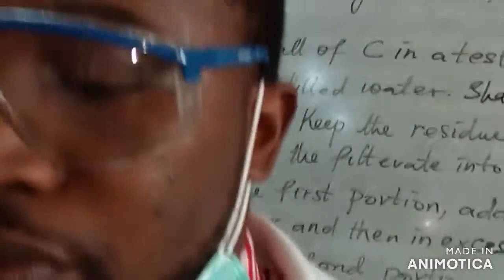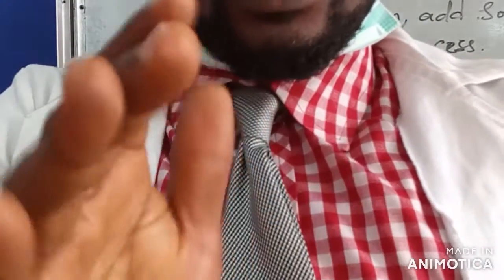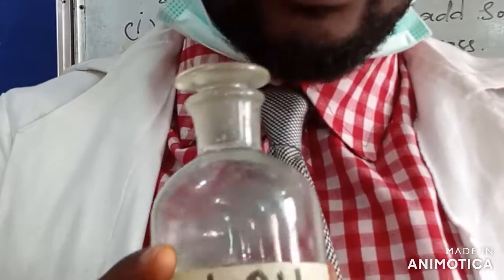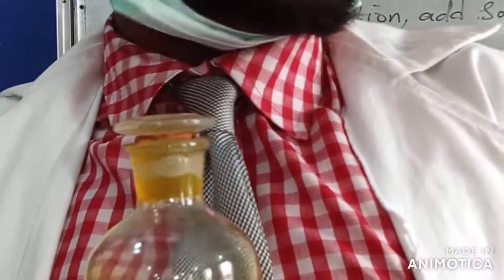Before I start, I would like to show us the reagents for today's salt test. The first one is our sodium hydroxide solution, which is very necessary for tests of cations. We also have our aqueous ammonia, which is our ammonium hydroxide. We have the barium chloride solution, and we also have our hydrochloric acid and potassium dichromate acidified.